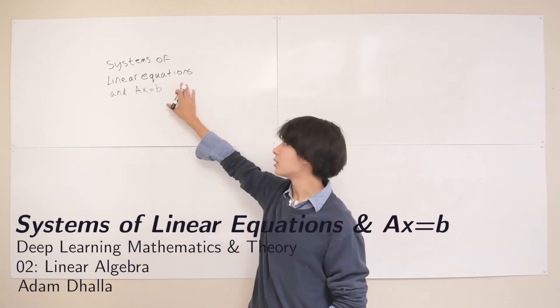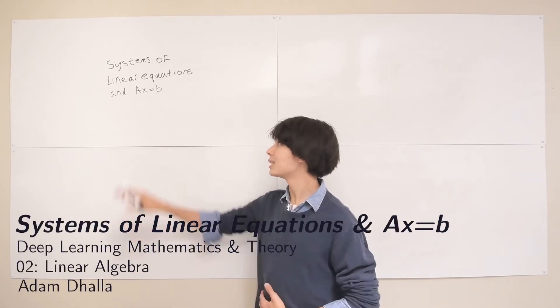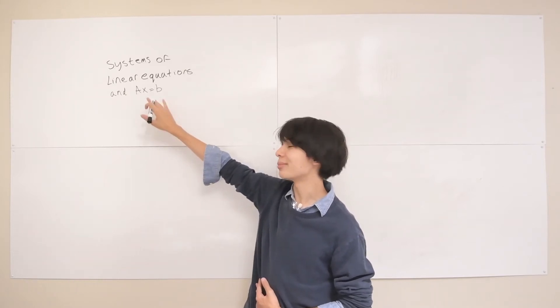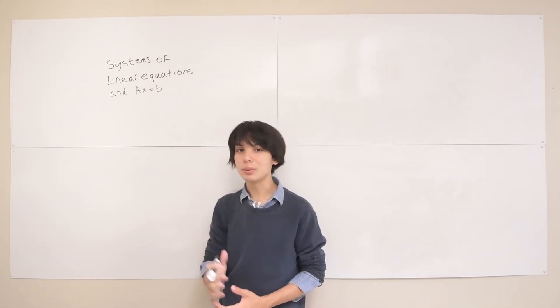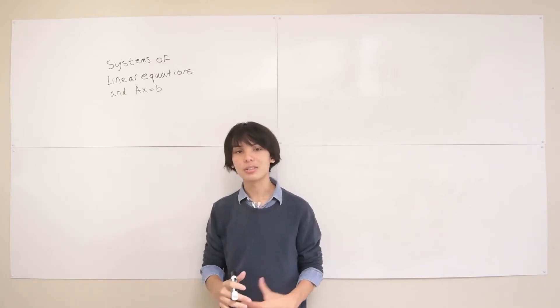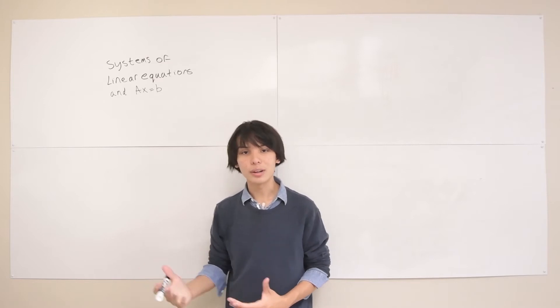Hi, in this lecture I'm going to be covering systems of linear equations and more specifically how we can very efficiently represent them with the matrix vector multiplication ax equals b, where x is a vector, a is a matrix, and b is another vector.